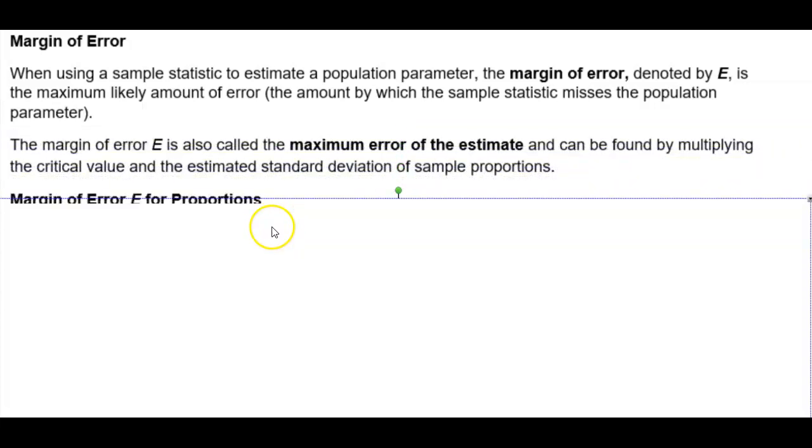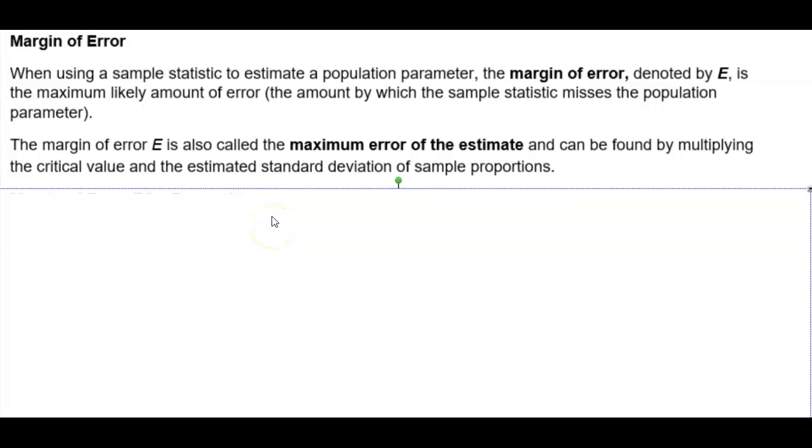The margin of error E is also called the maximum error of the estimate. It can be found by multiplying the critical value and the estimated standard deviation of sample proportions.